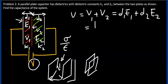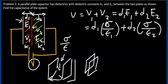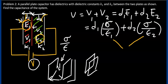The expression for E1 will become the surface charge density over the permittivity of the first dielectric, and likewise, E2 is the surface charge density over the permittivity of the second dielectric. These two expressions are the electric fields in dielectric 1 and dielectric 2 respectively, reduced compared to the original electric field by their respective permittivities.